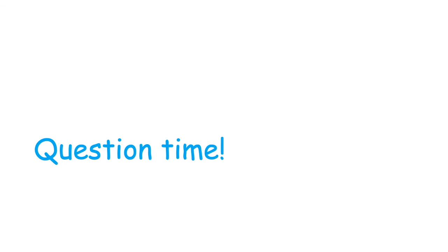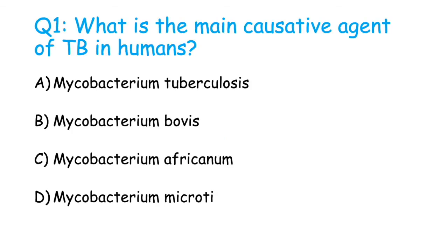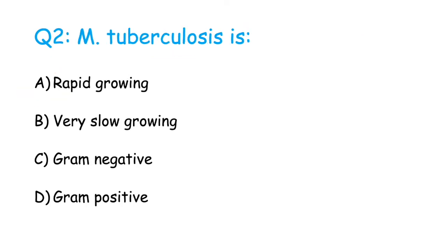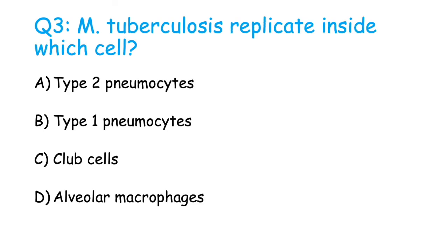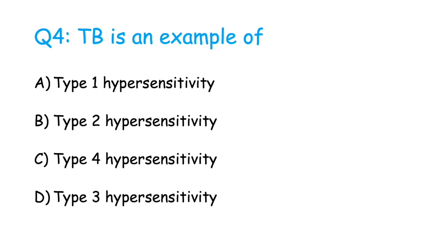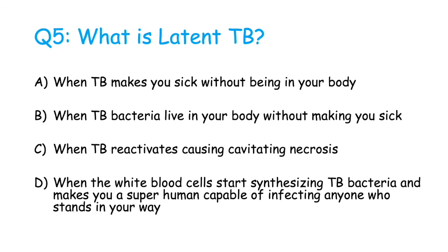Now let's move on to some questions to make sure you've understood everything. Feel free to pause the video to think of your answer. What is the main causative agent of TB in humans? Mycobacterium tuberculosis replicates inside which cell? TB is an example of what type of hypersensitivity reaction? What is latent TB?